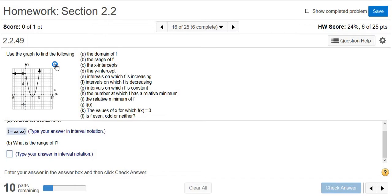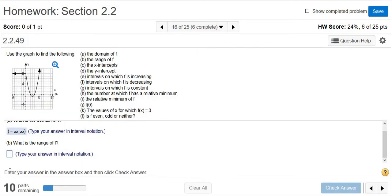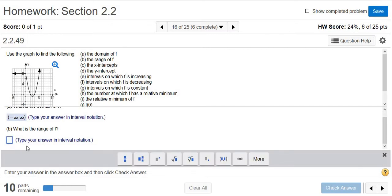We want the range now. The range is all the possible y values. You want to go from the bottom up for the range. So the smallest y value here appears to be negative 1. And then the graph goes up this way and it stops at 8. But over here, it keeps going forever. So it looks like it's going to be negative 1 to infinity. Negative 1 to infinity with a bracket at negative 1 because it's included—there's no hole there. So negative 1 to infinity in parentheses.